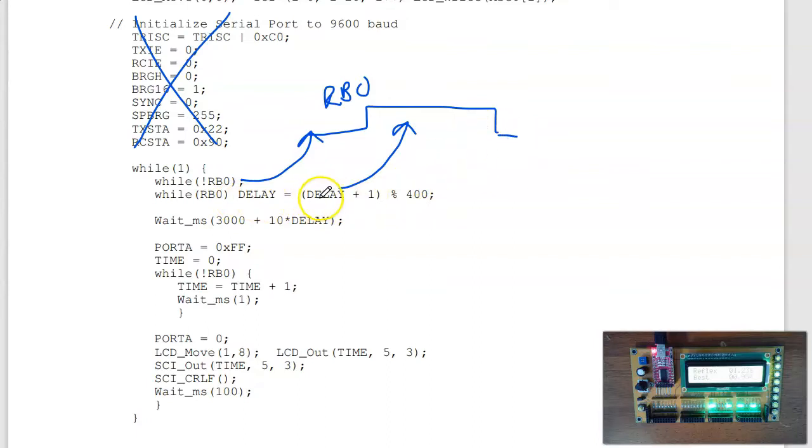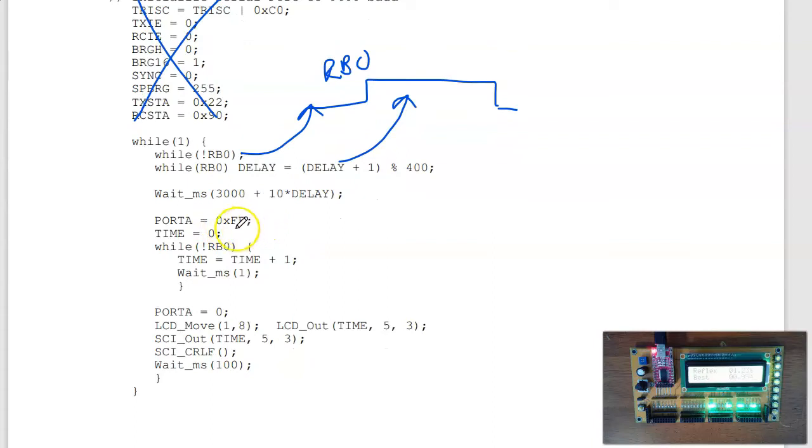To have a three to seven second delay, make that 3000 milliseconds, that's three seconds, plus 400 times 10 is 4000. This goes between 3000 and 7000, between three and seven seconds. Once I'm done waiting that much time, I'll turn on the lights on port A, set my timer to zero, and then count. How long does it take me to press RB0? So I'm going to keep on looping. Every time I loop, I count, and wait one millisecond, keep repeating. As soon as I hit the button, then whatever the time is, I kick out. I'll display the time. That's my reaction time. Send to the serial port to collect data and repeat.